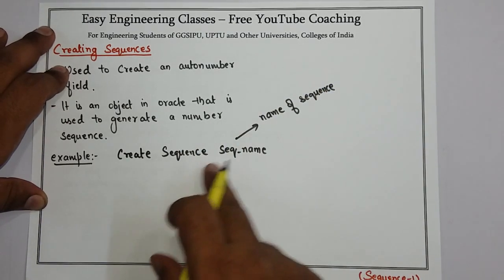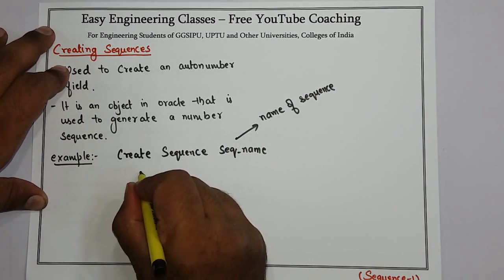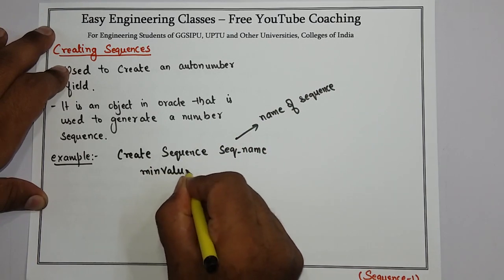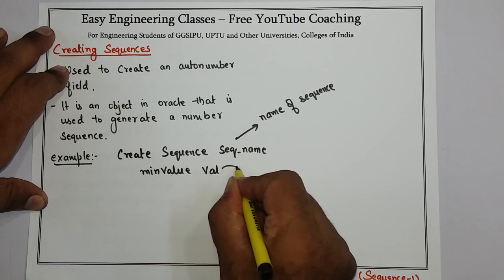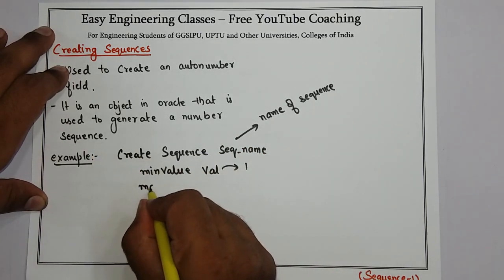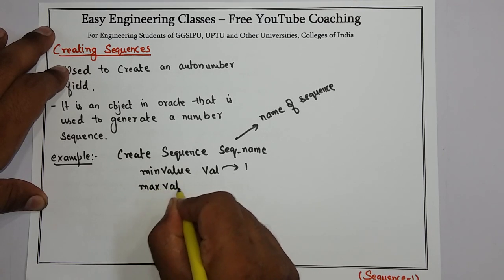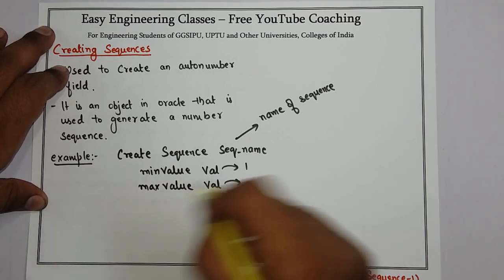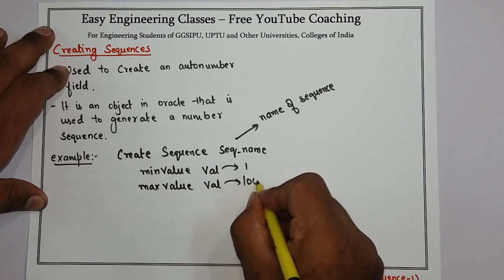Create sequence sequence_name, then the minimum value of the sequence. You have to specify the value. Suppose I am giving one. Then the max value and the value which you need to specify, for example 100.